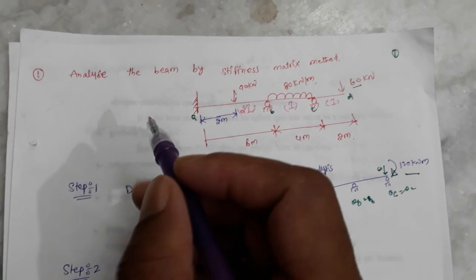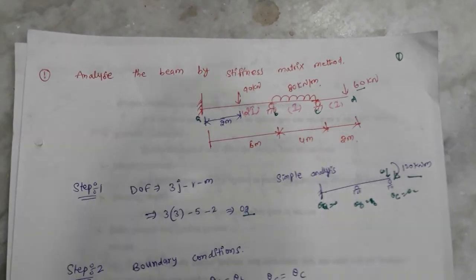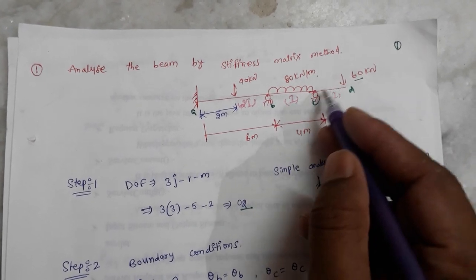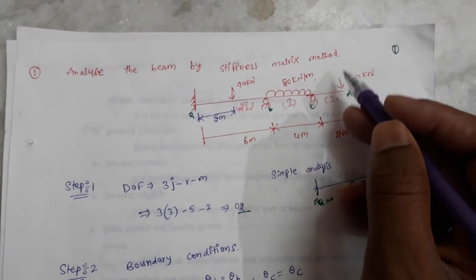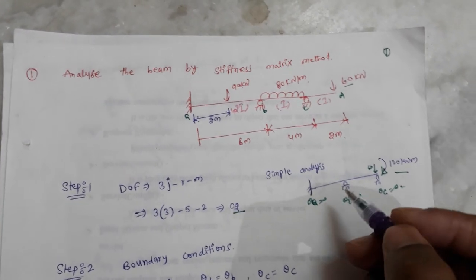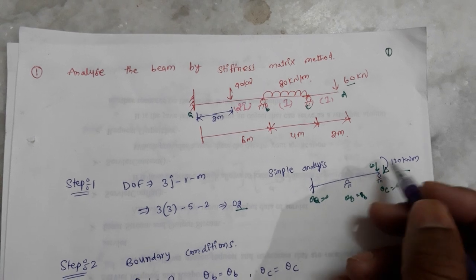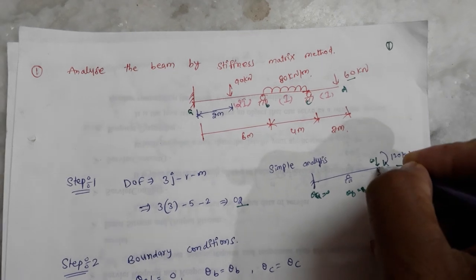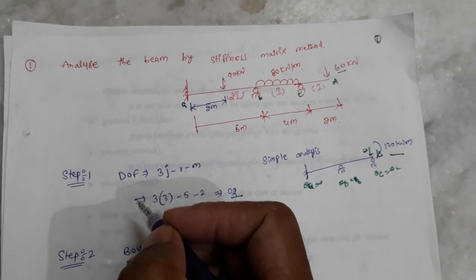Today we will discuss analysis of beams by using the stiffness matrix method. We have members that are free-free supported, so we need to treat forces as nodal forces and nodal moments. Nodal means joint — the forces will act at the joints.